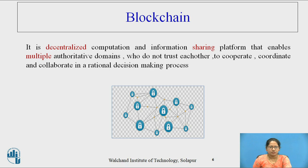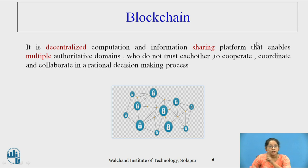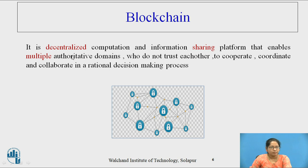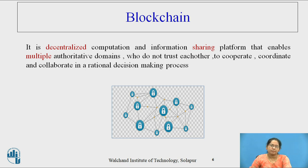So what is blockchain? It is a decentralized computation and information sharing platform. Two key characteristics: decentralized and information sharing platform, that enables multiple authoritative domains. Many users who do not trust each other cooperate, coordinate, and collaborate in a rational decision-making process.